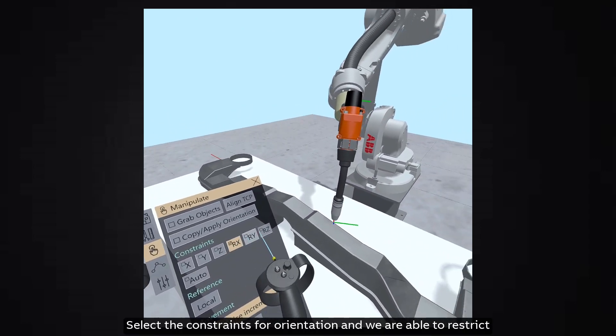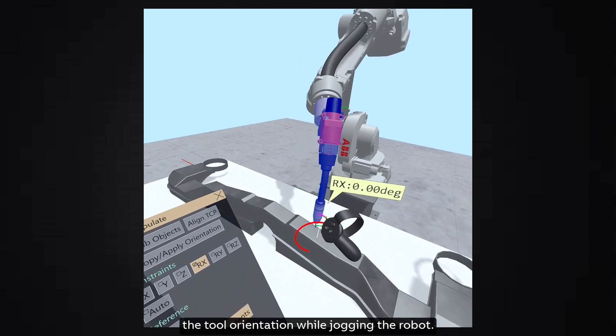Select the constraints for orientation and we are able to restrict the tool orientation while jogging the robot.